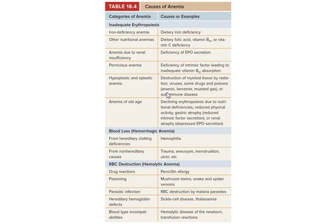Chemo or radiation can destroy your ability to make blood cells. Arsenic, exposure to benzene at work, or mustard gas can also cause anemia. Some autoimmune diseases cause you to break down your own red blood cells. And then there's old age — older people aren't making as much, their bone marrow has converted to fatty marrow, so they make blood only in flat bones. It's not uncommon for old people to be anemic just because of age.